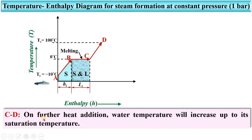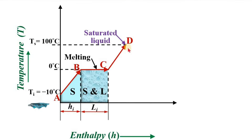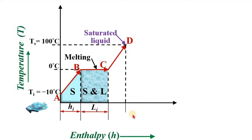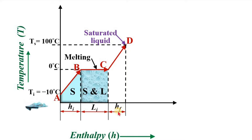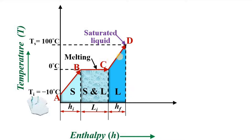During the process C to D, on further heat addition, the water temperature increases up to its saturation temperature. At this point the liquid is saturated, and this amount of heat is called HF — the enthalpy of fluid. During this process the temperature rises and the phase is liquid only, so there is no phase change.